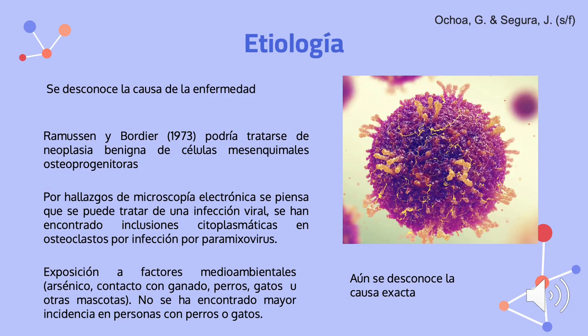Las causas de la enfermedad de Paget ósea aún se desconocen. Sin embargo, Rammusen y Bordier en 1973 postularon que podría tratarse de una neoplasia benigna de células mesenquimales osteoprogenitoras. Por otra parte, por hallazgos de microscopía electrónica, se piensa que se pueda tratar de una infección viral; se han encontrado inclusiones citoplasmáticas en osteoclastos por infección por paramixovirus. También se ha postulado que la exposición a factores medioambientales como el arsénico o contacto con ganado, perros, gatos u otras mascotas podrían desencadenar la alteración. Sin embargo, no se ha logrado encontrar una mayor incidencia entre sujetos dueños de gatos o perros.